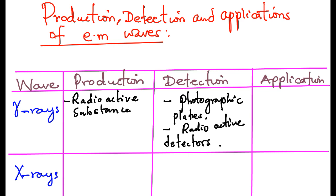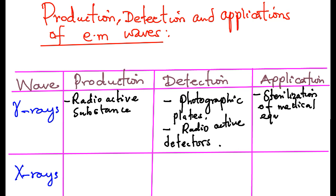Due to their high energy and penetrating power, gamma rays can be used for sterilization of medical equipment. They can also be applied in industries to detect flaws in metals.